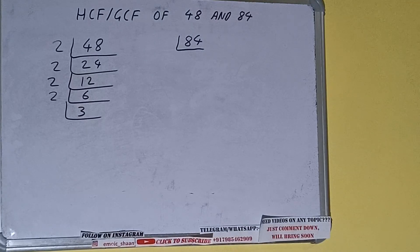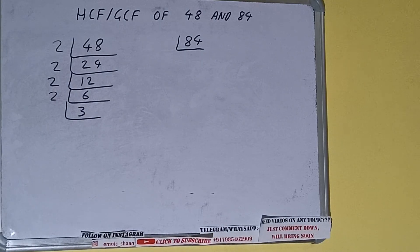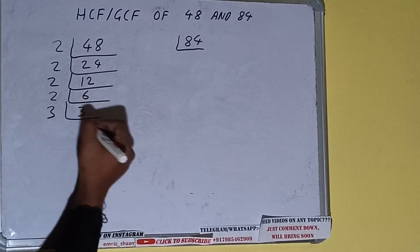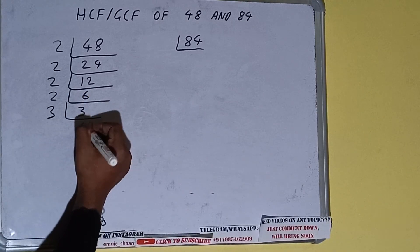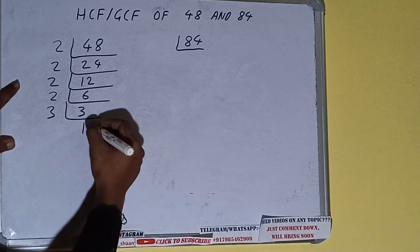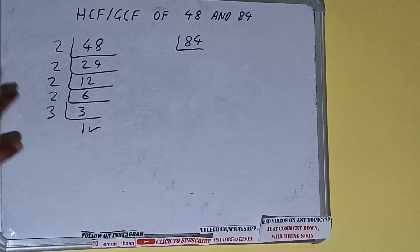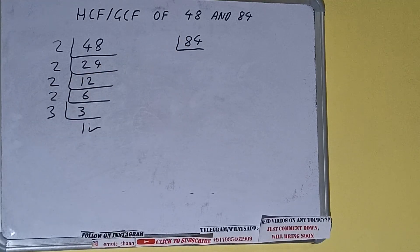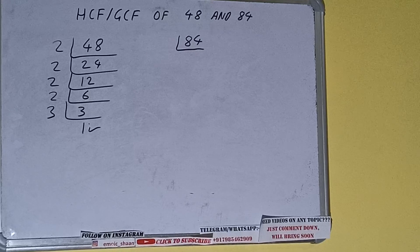3 is not divisible by 2 because it is an odd number, and on top of that it is also a prime number, so it is only divisible by itself, that is 3. Once we do so we'll be getting 1. Once we get 1 we need to stop, and we need to do the same with the number 84.